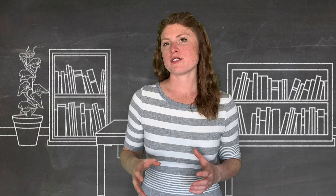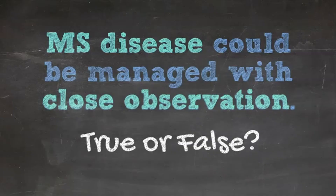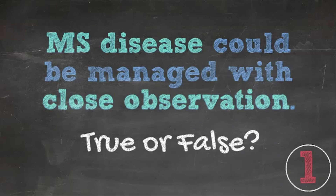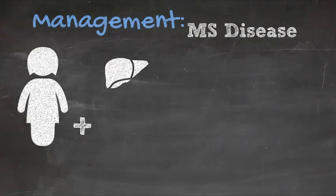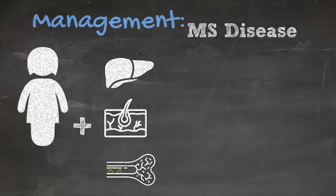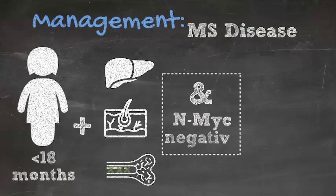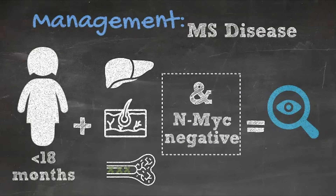What if our patient has MS disease? MS disease is specifically for patients who have a primary site with metastatic disease to the liver, the skin, or the bone marrow — specifically not cortical bone — and who are less than 18 months of age. In those patients, simple observation can be the treatment path. If they progress or develop respiratory issues because of an enlarging liver mass, then you might elect to treat them because of the complication of the tumor size, but the tumor itself usually does not have to be treated.